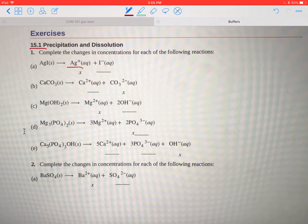we have one silver ion and one iodide ion. So if silver ion is X, iodide ion must be X as well.